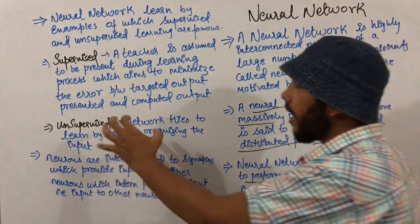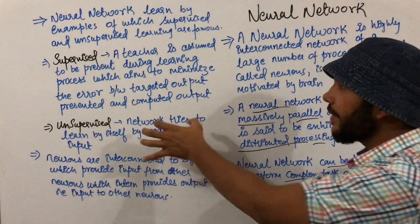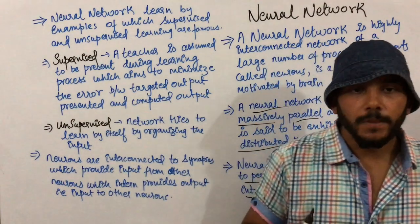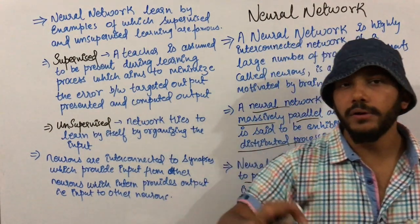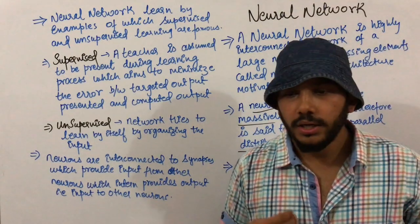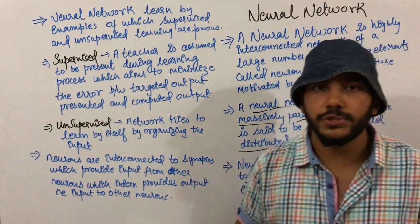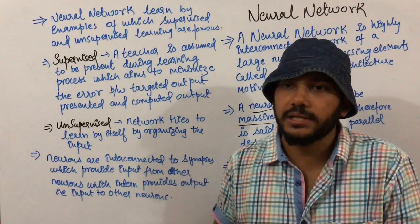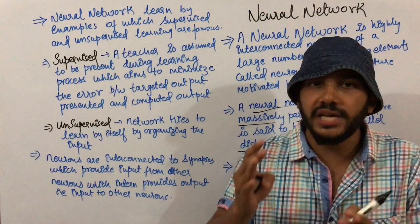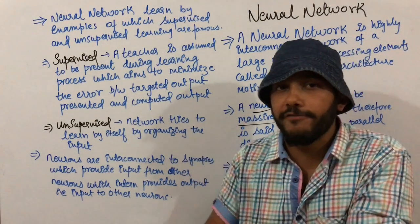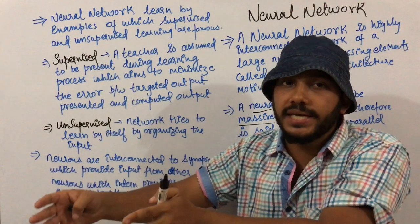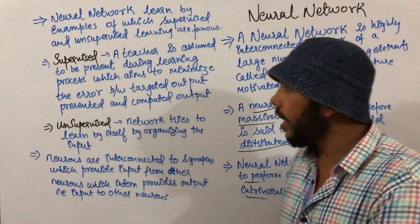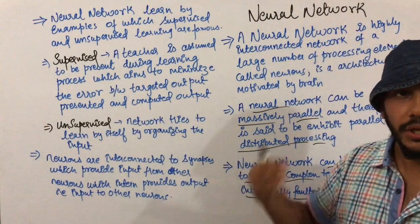In unsupervised learning, the network tries to learn by itself, organizing the input with no teacher present. For example, if no teacher comes to your college and you have to learn a subject on your own, that is unsupervised learning — no teacher is present to tell you whether your output matches the actual output or how correct it is. You learn entirely by yourself.